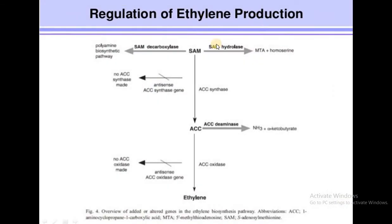In the regulation of ethylene production, ethylene is derived from the amino acid methionine. Methionine is converted into S-adenosylmethionine (SAM) by SAM synthetase. SAM may also be converted into MTA (5'-methylthioadenosine) plus homoserine, or enter the polyamine biosynthetic pathway via SAM decarboxylase. In ethylene production, SAM is converted into ACC (1-aminocyclopropane-1-carboxylic acid) by ACC synthase. ACC may then be converted into NH₃ plus alpha-ketobutyrate by ACC deaminase, or converted into ethylene by ACC oxidase. The entire pathway is regulated by two antisense genes that control the production of ACC synthase and ACC oxidase.